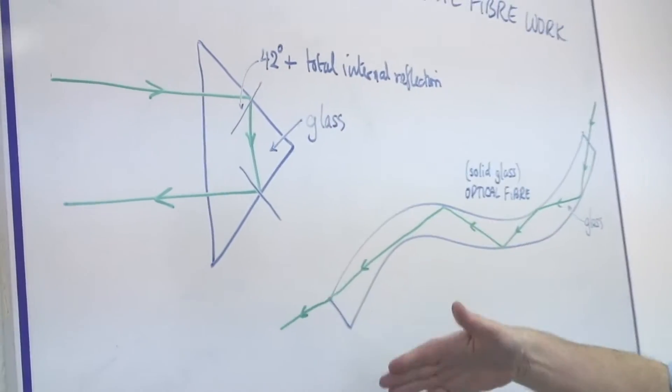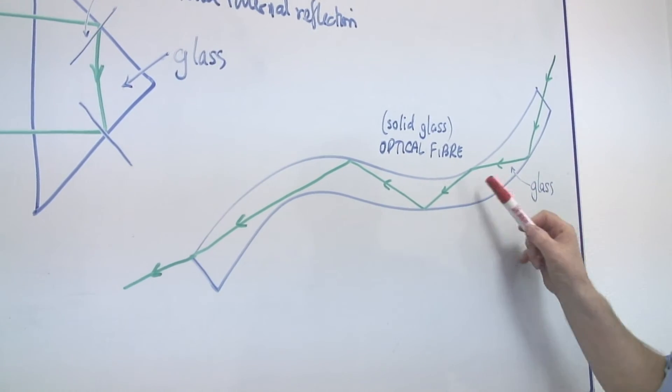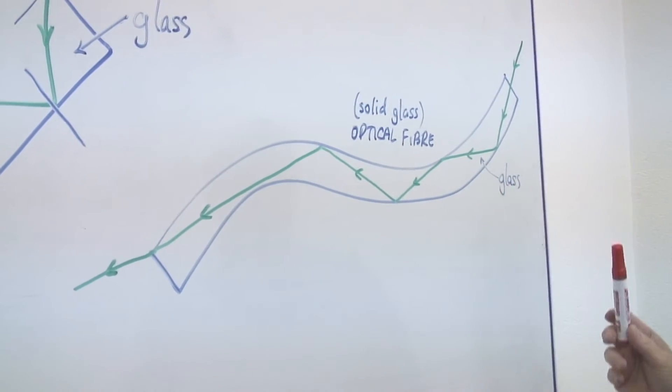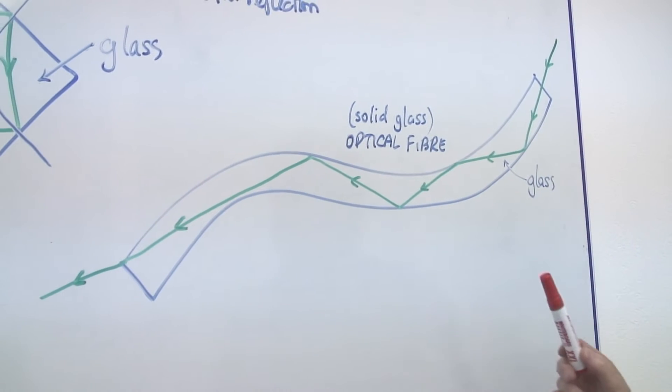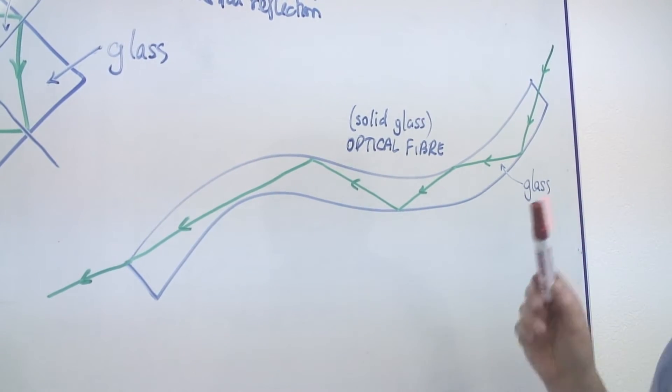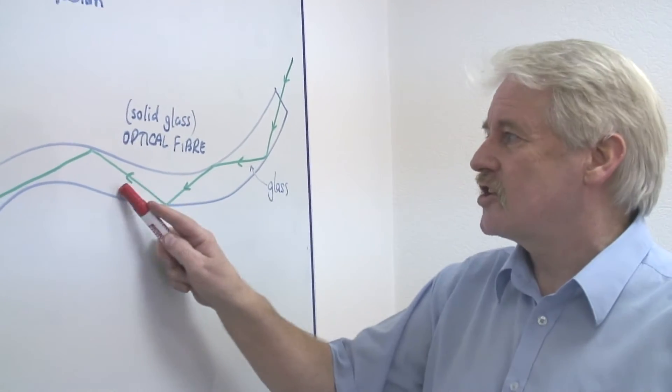If we have an optical fibre, we have the same situation. The interesting thing about an optical fibre, is that in fact, it is solid glass, it is not a tube. People often see a diagram and think it's a tube. It is not. There's no air inside it, it's solid glass.